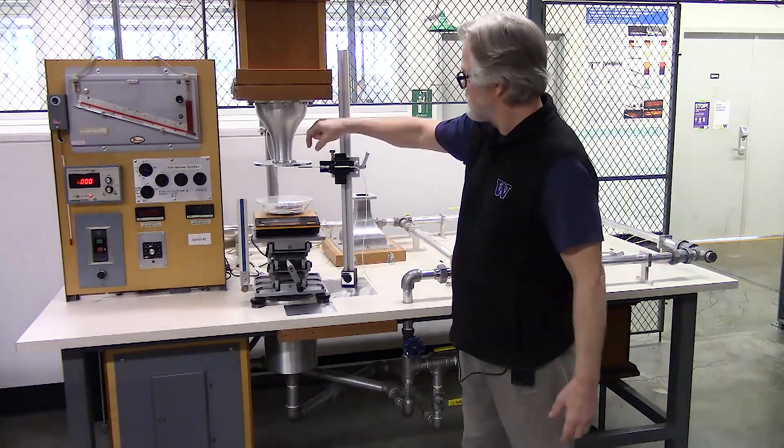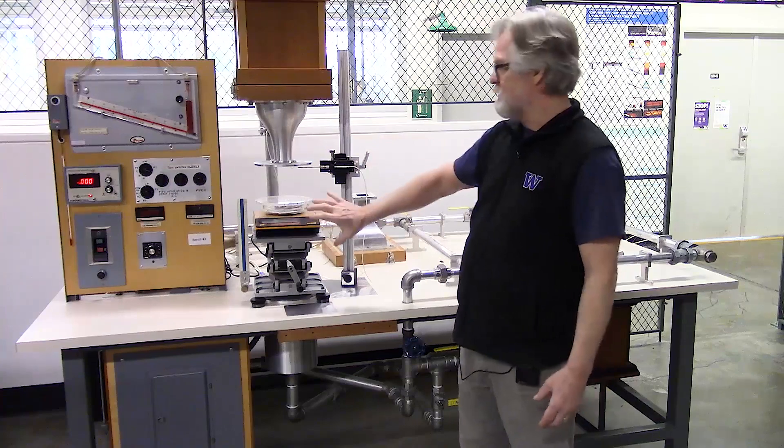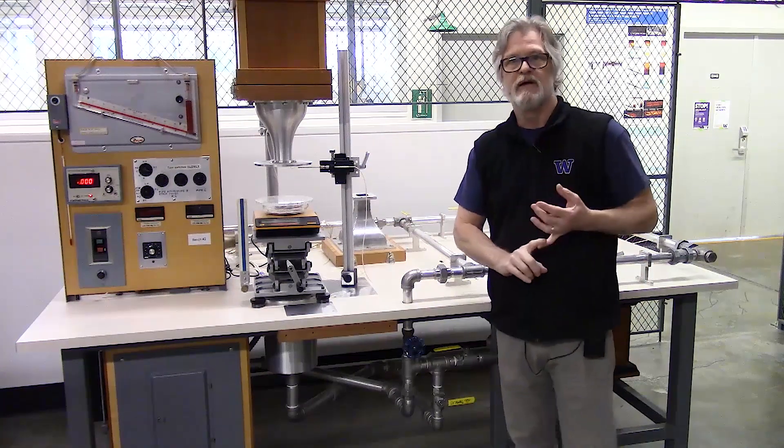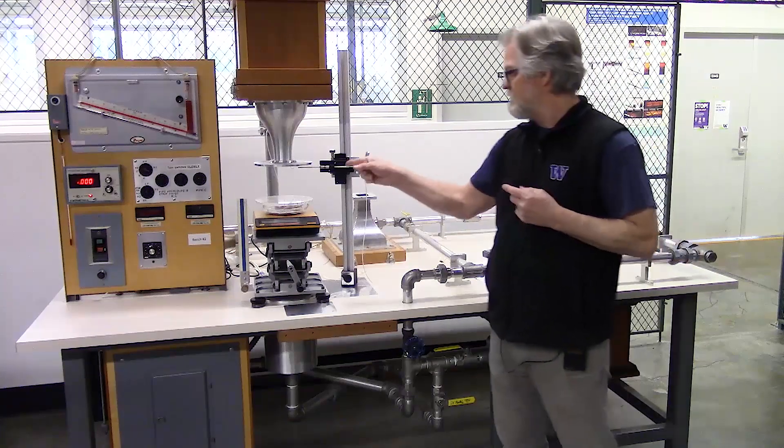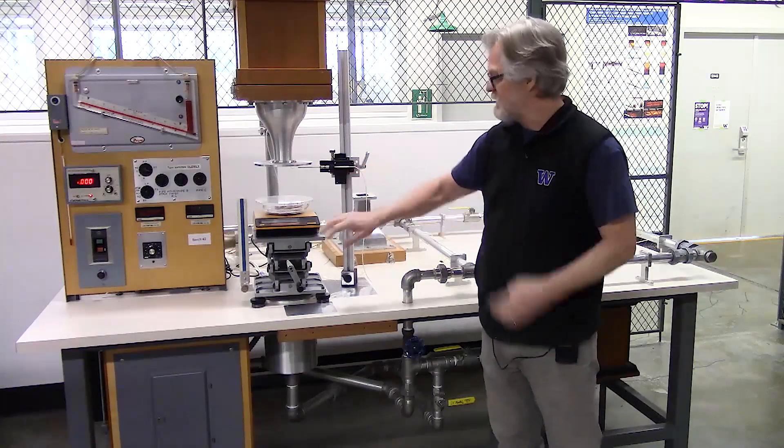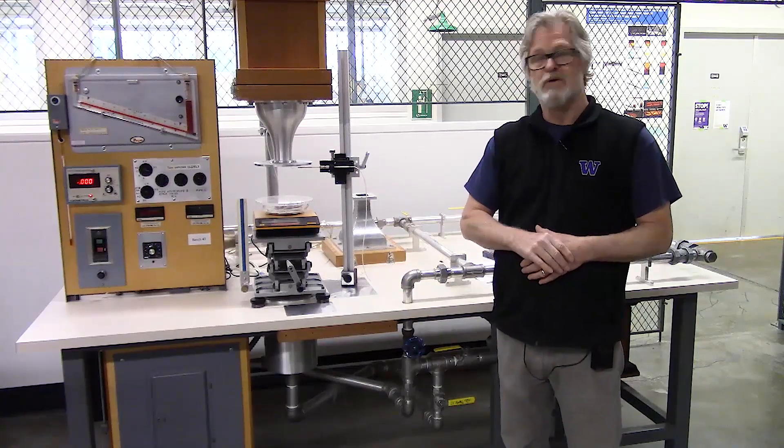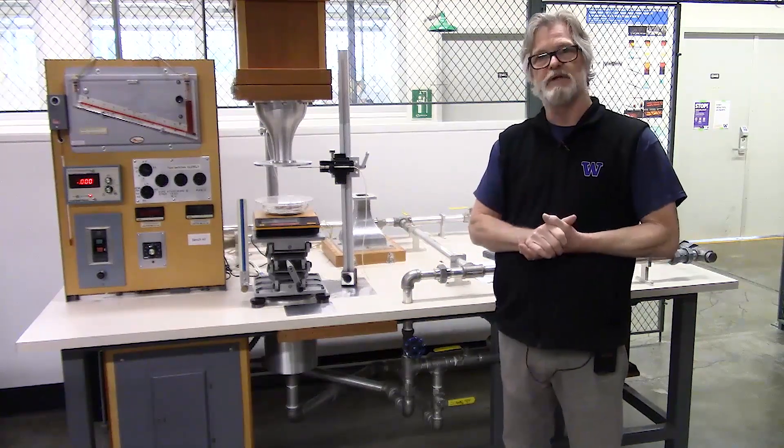That air eventually exits through this nozzle here where we have our experiment set up. We have a means to measure the flow rate, we have a pitot tube to measure the velocity profile, we have an electronic balance here to measure the downforce of the air jet. So we'll go into all this stuff in a little more detail as we run through the experiment.